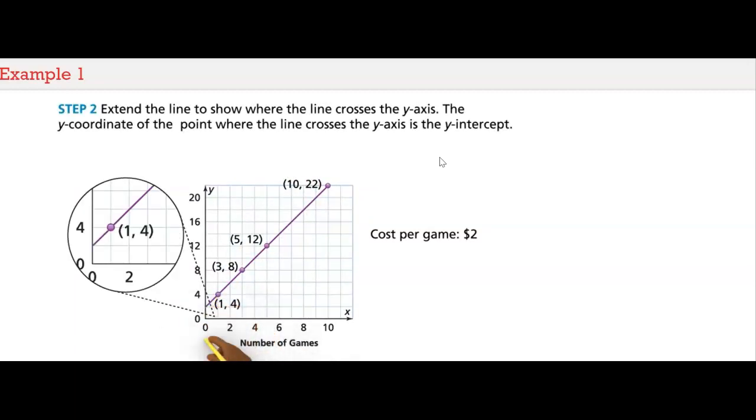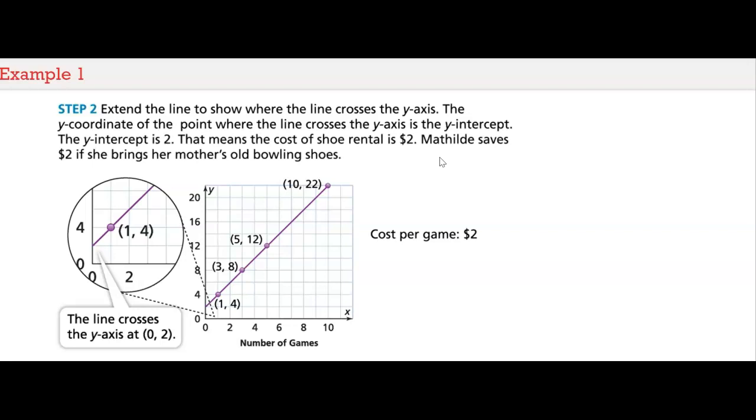Extend the line to show where the line crosses the y-axis. The y-coordinate of the point where the line crosses the y-axis is the y-intercept. The line crosses the y-axis at the point zero, two. The y-intercept is two. That means the cost of the shoe rental is two dollars. Matilda saves two dollars if she brings her mother's old bowling shoes.